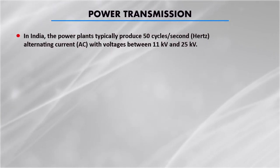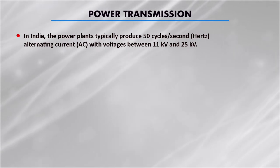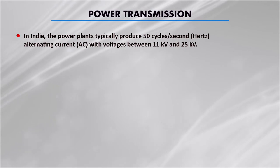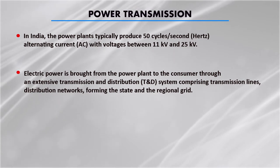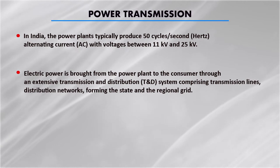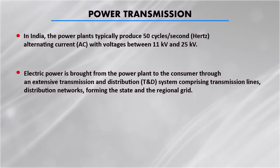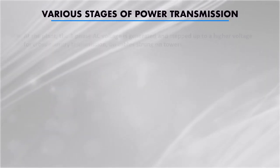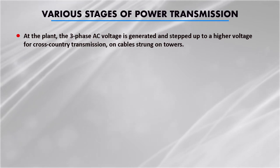Now we are going to discuss about power transmission. In India, power plants produce at 50 cycles per second frequency, measured in hertz, and at voltages between 11 kV and 25 kV. The electric power is brought from the generating power plant to the consumer through an extensive transmission and distribution system comprising transmission lines, which may have distribution networks forming the state and regional grid. At the power plant, three phase voltage is generated and stepped up to a higher voltage for cross-country transmission.